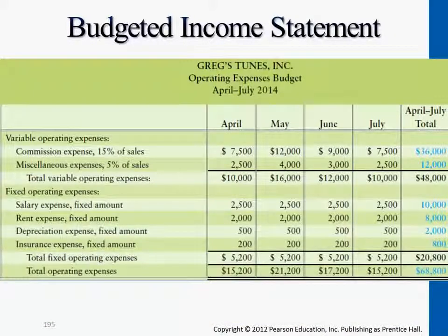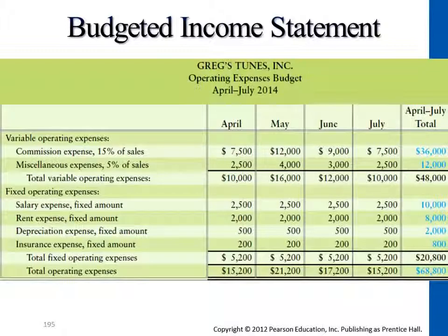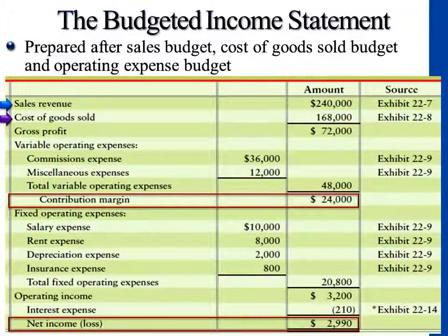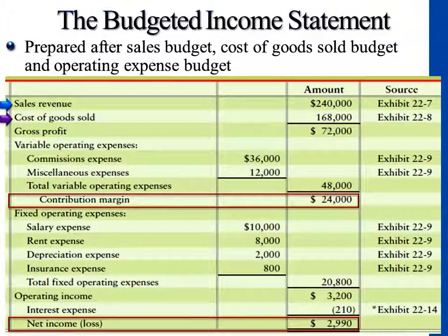And then we have all the operating expenses. You'll be copying those blue lines, adding together the variable expenses and fixed expenses to this portion here. So if we combine all three tables you will get to this: $240,000 from the first table, $168,000 for the cost of goods sold inventory table, and the remaining is from the last one, operating expenses.